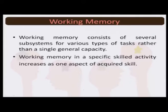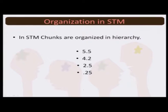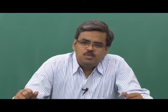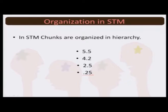Working memory basically consists of several subsystems for various types of tasks rather than a single general capacity, and working memory in a specific skilled activity increases as one aspect of acquired skill. What is also very interesting is that the chunks we form are organized hierarchically in short-term memory — if you try to disorganize them, storage becomes problematic. For example, consider the number 0.25; when the decimal place changes it becomes 2.5. You can use the strategy of recognizing that only one set exists with repositioning of the decimal point.